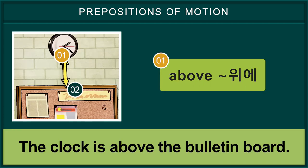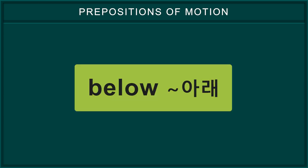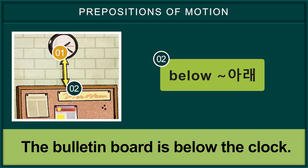Above — the clock is above the bulletin board. Below — the bulletin board is below the clock.